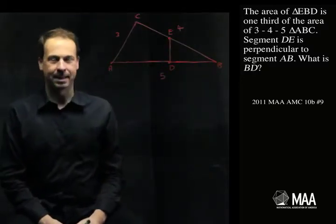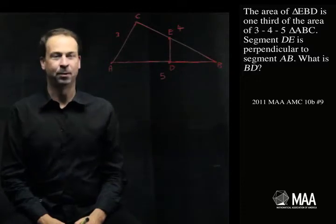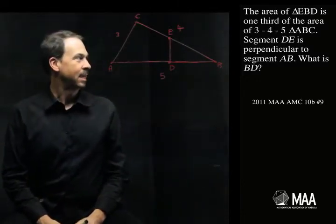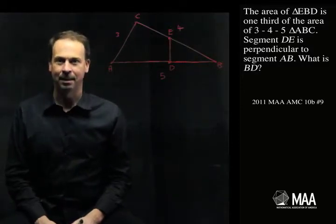The area of triangle EBD is one third of the area of the 345 triangle ABC. Segment DE is perpendicular to segment AB. What is BD?